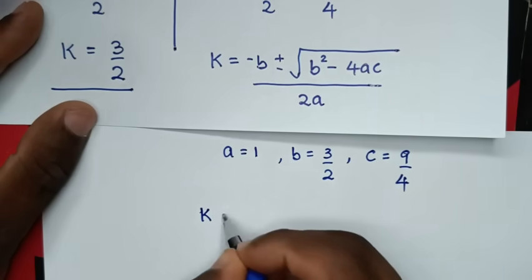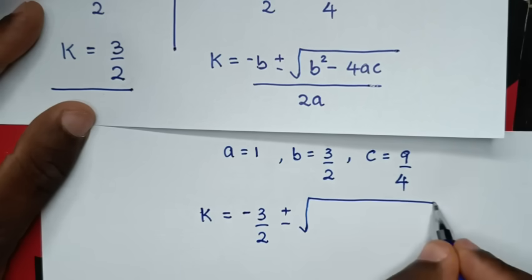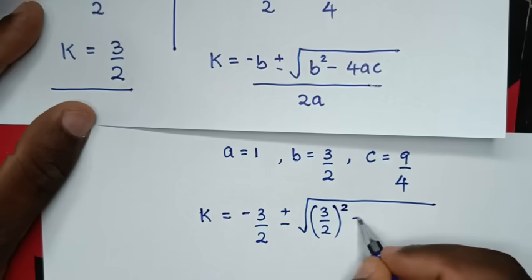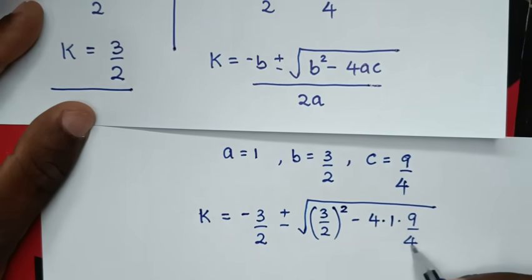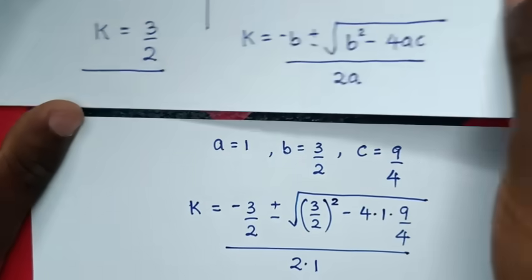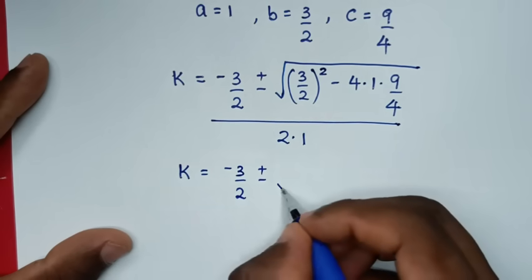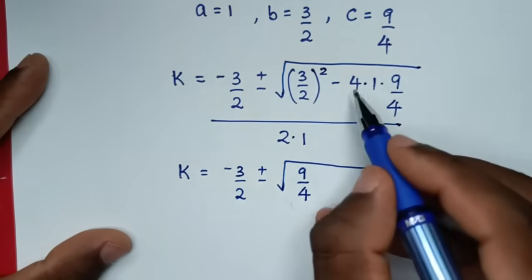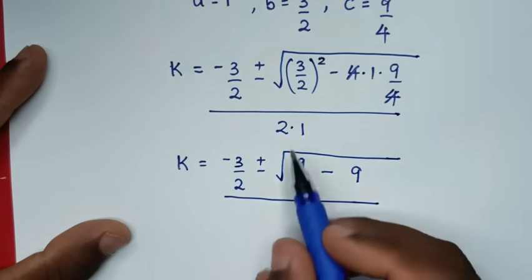Substituting, k is equal to negative b — which is negative 3 over 2 — plus or minus the square root of b squared, which is (3 over 2) squared, minus 4 times a — which is 1 — times c, which is 9 over 4, over 2a, which is 2 times 1. In the next step, this gives k equals negative 3 over 2 plus or minus square root of 9 over 4 minus 9, over 2.